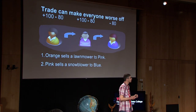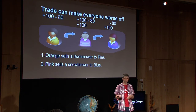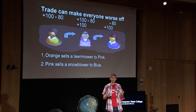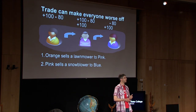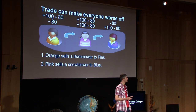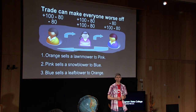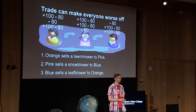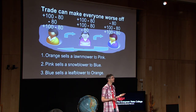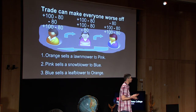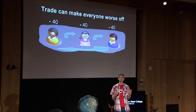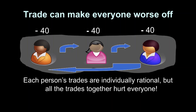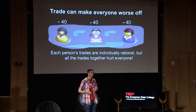Now a similar story: pink is going to sell a snowblower to blue. They each get $100 in benefits — pink from selling the snowblower for $100 that was just sitting in her garage, and blue, who would be willing to pay $200, only has to pay $100. But when blue starts using that snowblower, air pollution gets a little worse — an additional $80 in health care costs for everyone. And you just complete the circle: blue sells a leaf blower to orange, they get $100 in benefits, air pollution gets worse, an additional $80 in health care costs for everyone. If you add up any one of these columns, after all three trades together, everybody ends up at minus $40. This is the tragedy of the commons, the prisoner's dilemma. Each person's trades are individually rational — each trade leaves them $20 better off — but altogether, the trades end up hurting everybody. If you want to make a connection to climate change, you could label the people.